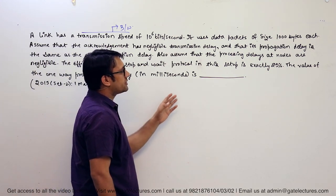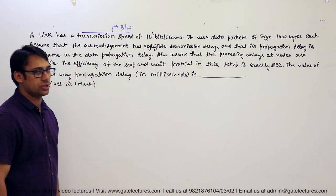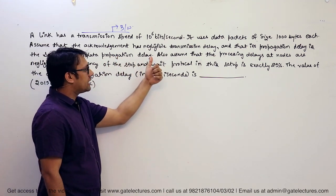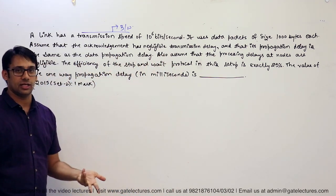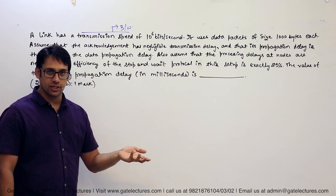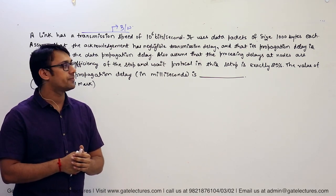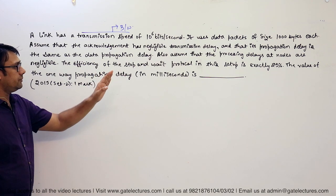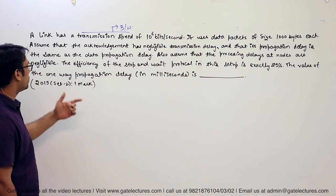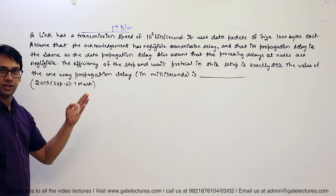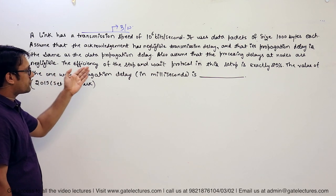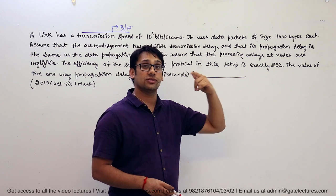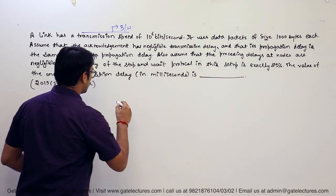It uses data packets of size 1000 bytes each. Assume that the acknowledgement has negligible transmission delay — that means we assume the transmission delay for acknowledgement as 0 — and that its propagation delay is the same as the data propagation delay. Also assume that the processing delay at the nodes is negligible. The efficiency of the Stop-and-Wait protocol in this setup is exactly 25%.